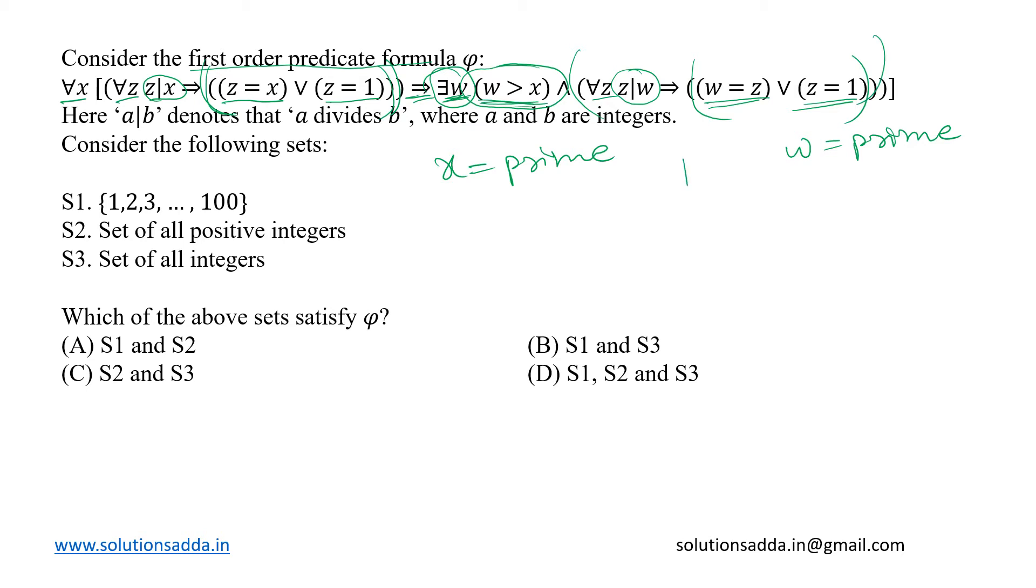So we can further simplify it to say that for a given domain, if there is a prime number x, then there will also exist another prime number w such that w is greater than x.